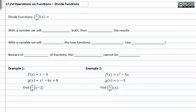When we divide functions like f divided by g, that's the same as f of x divided by g of x. And so when we have a number, we will evaluate both of them, then divide the results. With a variable, we will divide the two functions together.